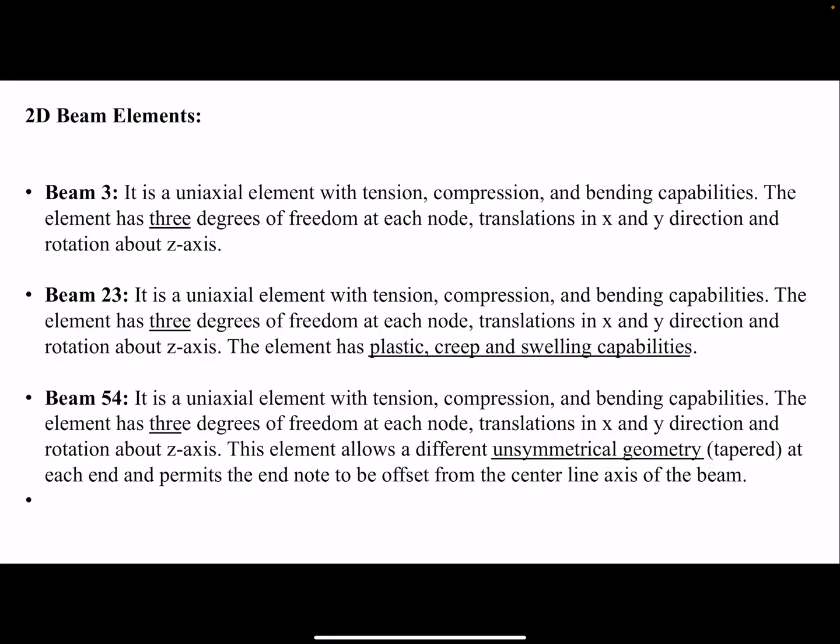So in case of 2D, you have the choice of Beam 3, 23, and 54. All of them are based on three degrees of freedom at each node, that means six degrees of freedom in total. Beam 3 is the simplest one, so it's the most computationally efficient. Beam 23 can consider material non-linearity, and Beam 54 allows for unsymmetric geometry.